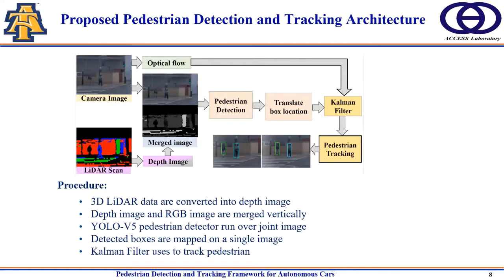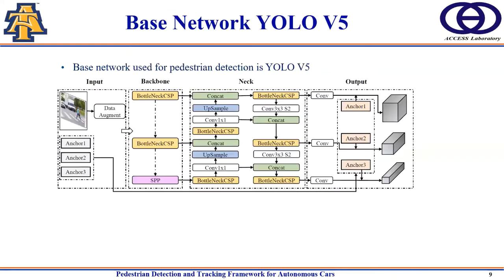Here is the architecture of our method. We first convert the 3D LiDAR data into a depth image, then merge the depth image and RGB image vertically. Next, we pass the joint image through the base network YOLOv5. After that, we map all detected boxes onto a single image, and finally use a Kalman filter to track the stream.